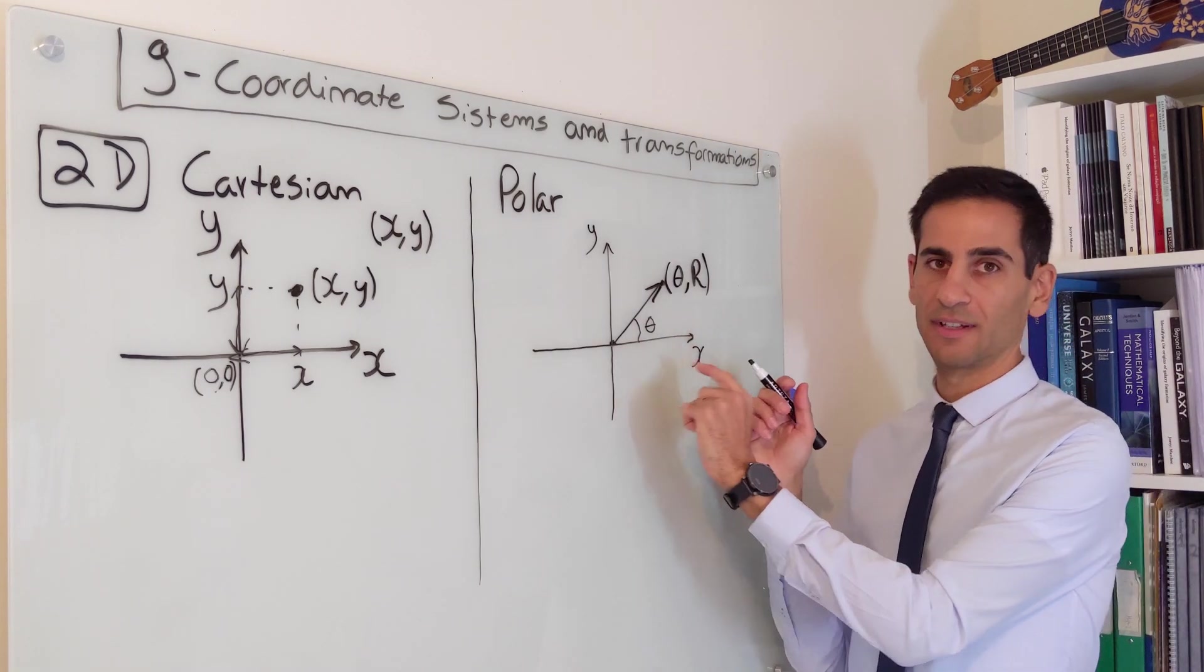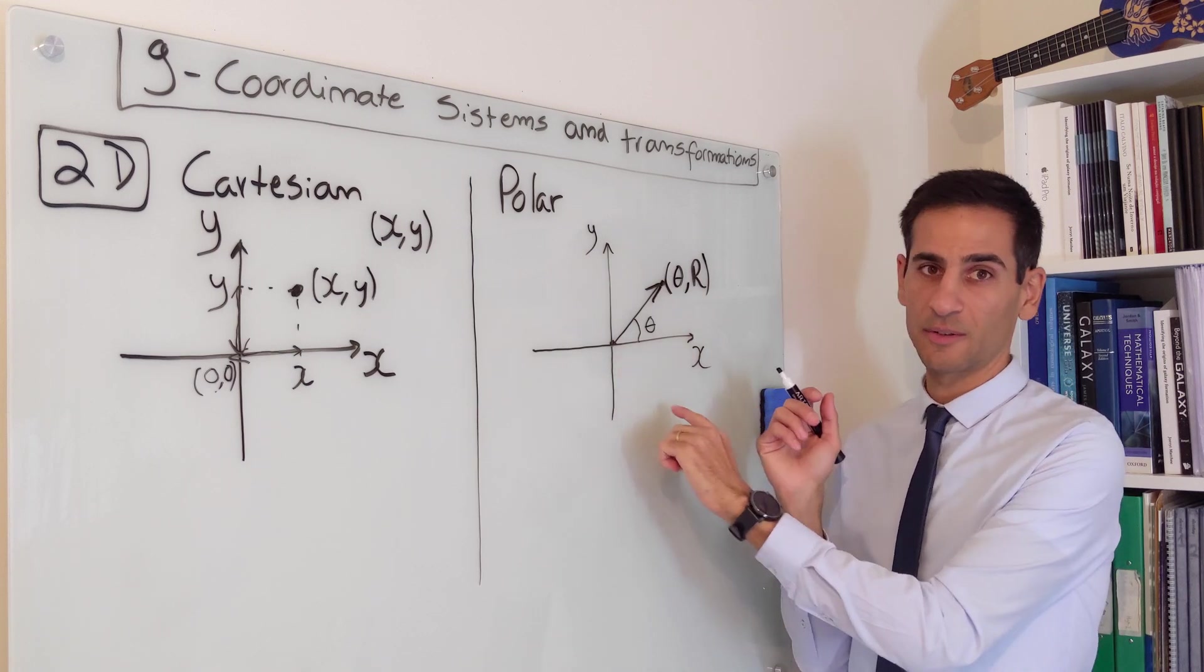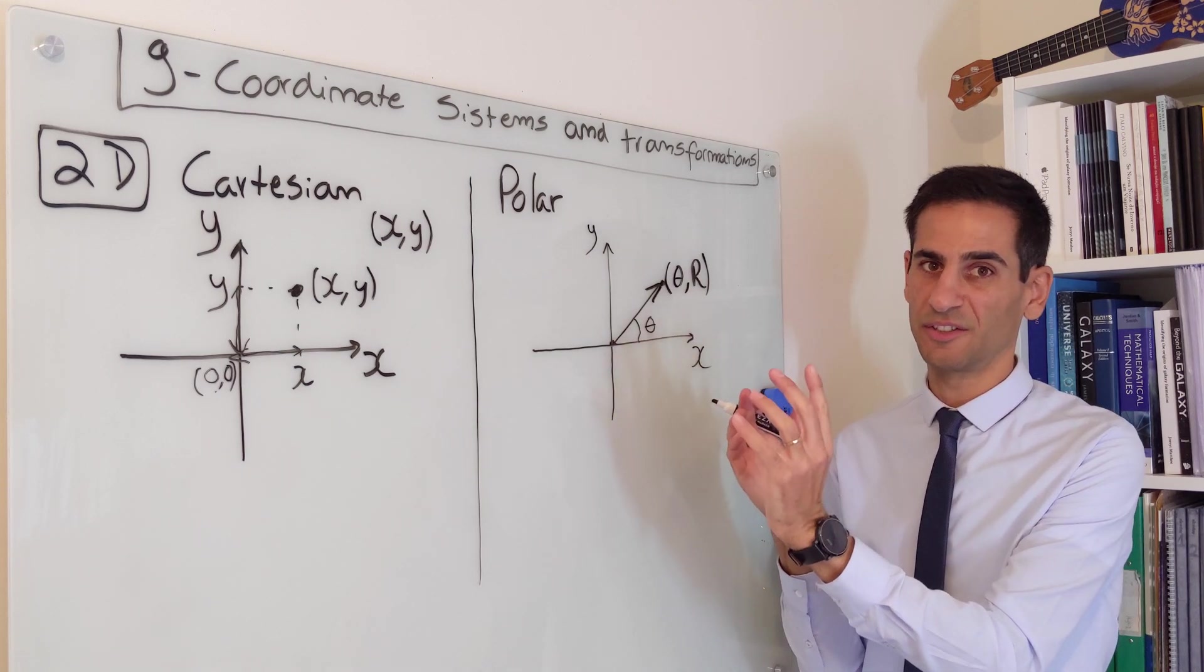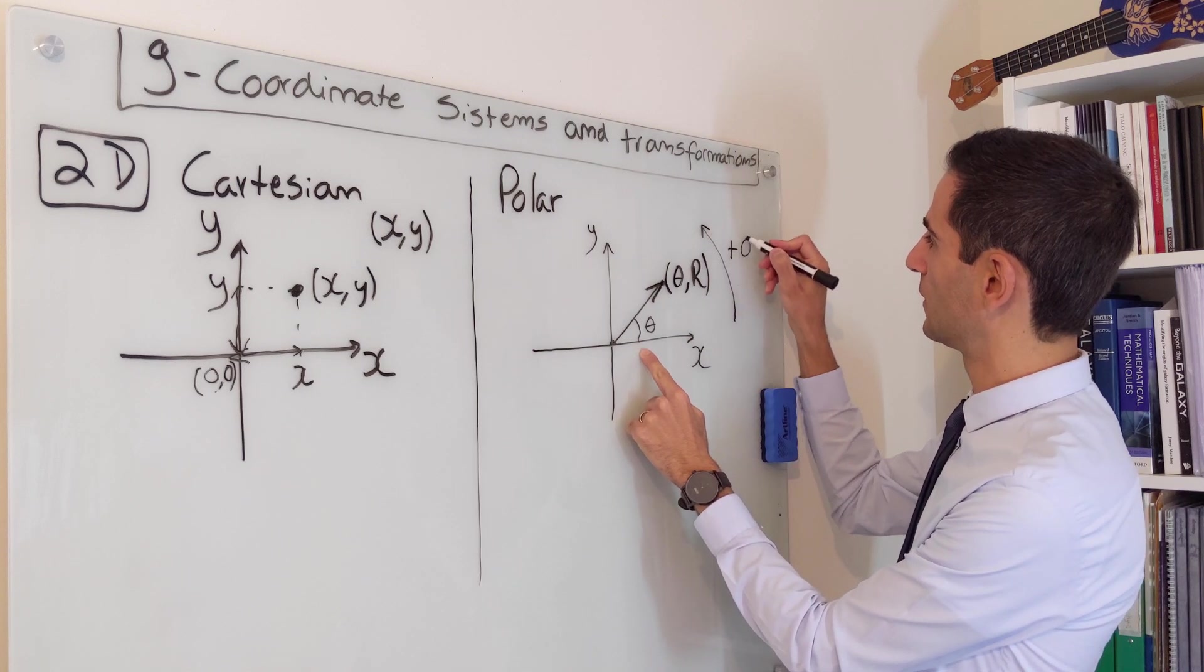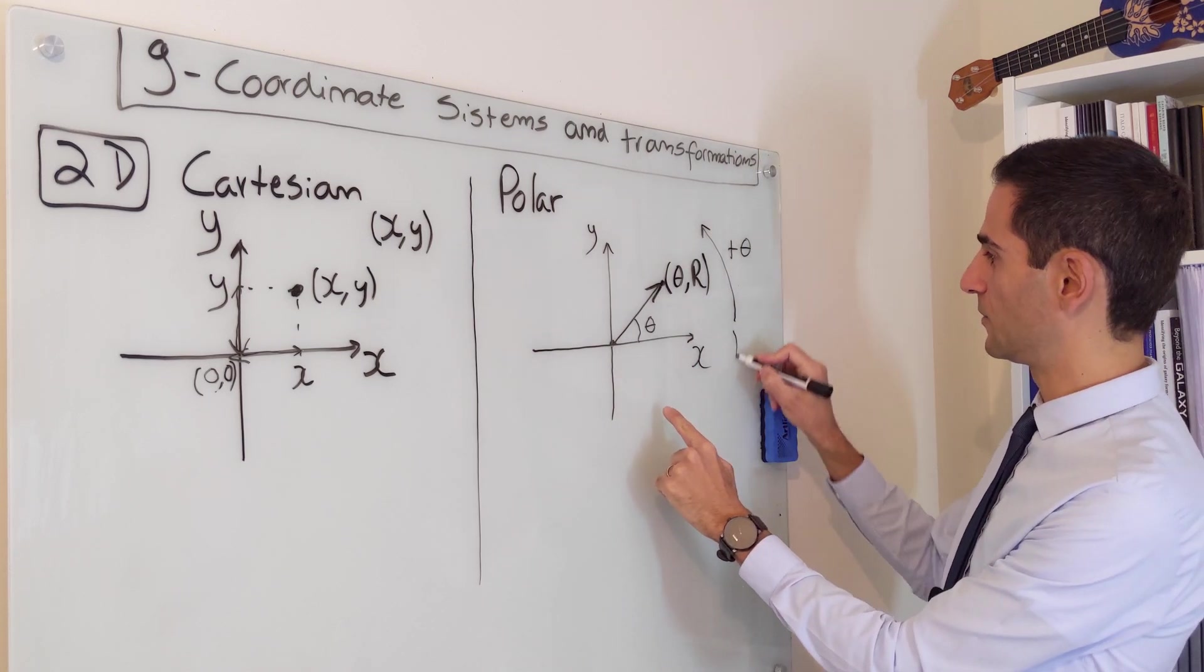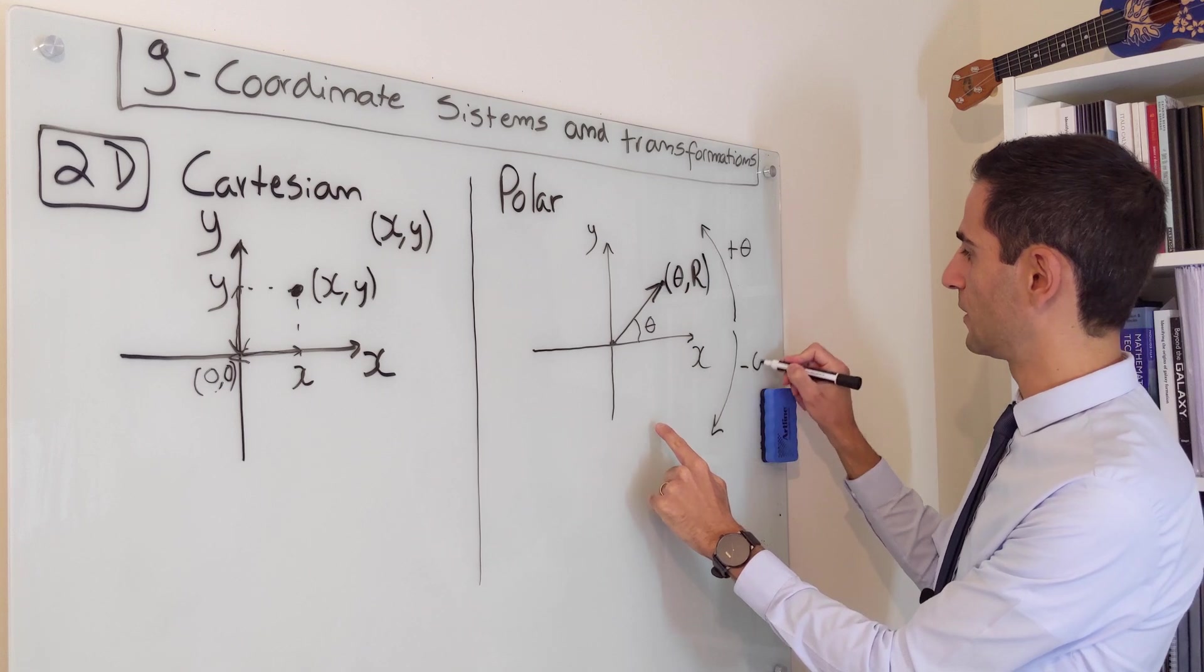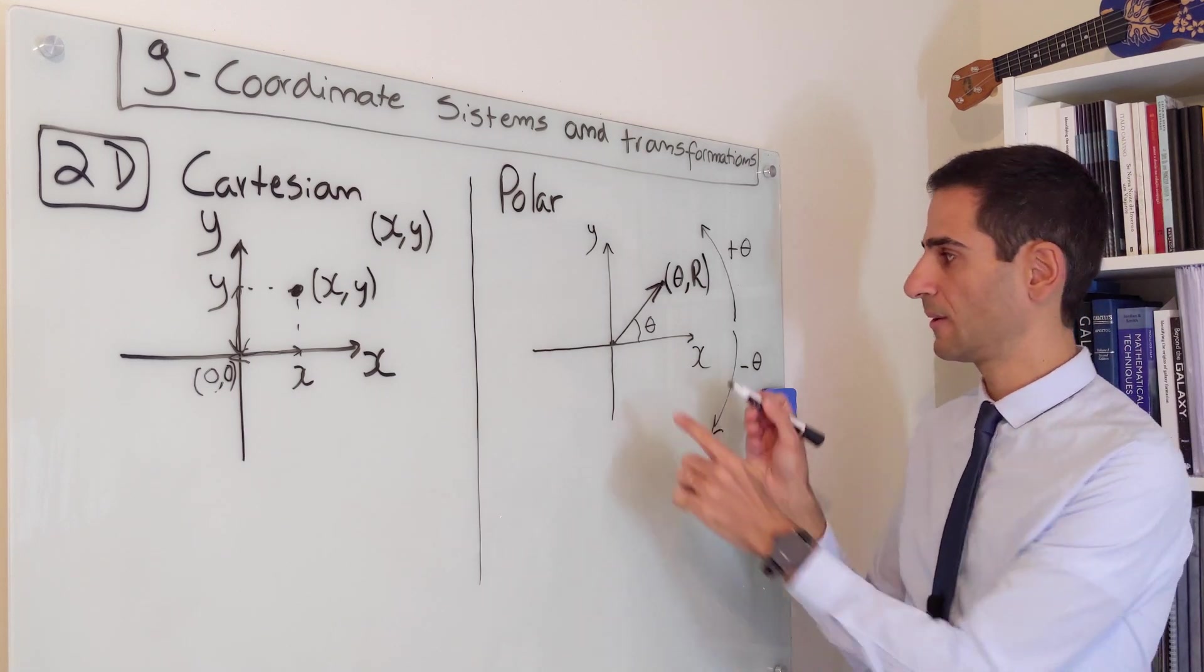And this is typically the angle that we define. So we start counting from the corresponding x-axis in Cartesian. We move this way when theta is positive, and we move the other direction when theta is negative.